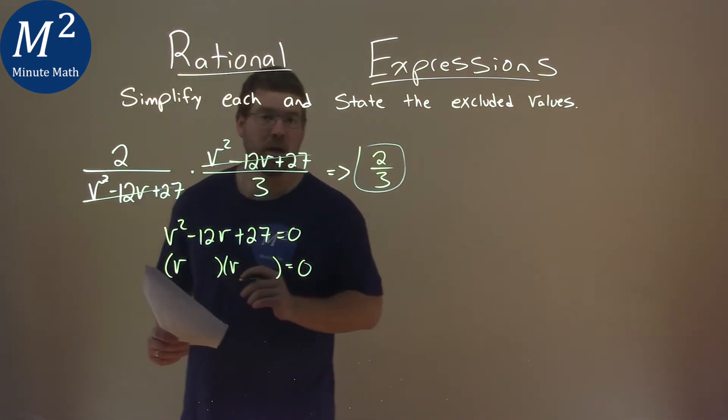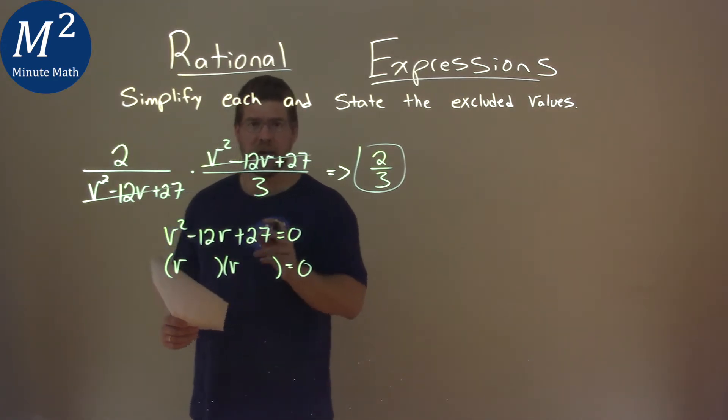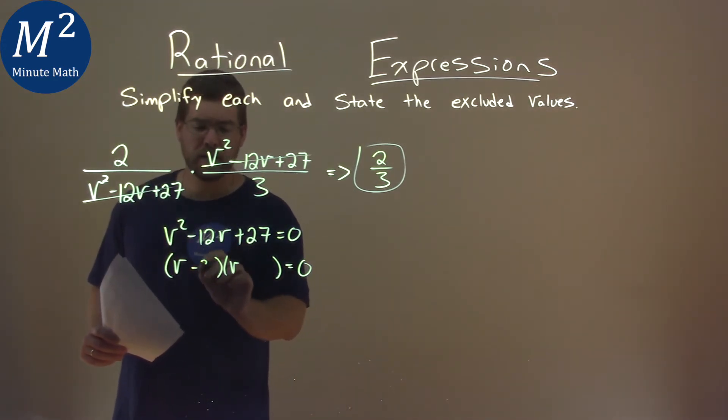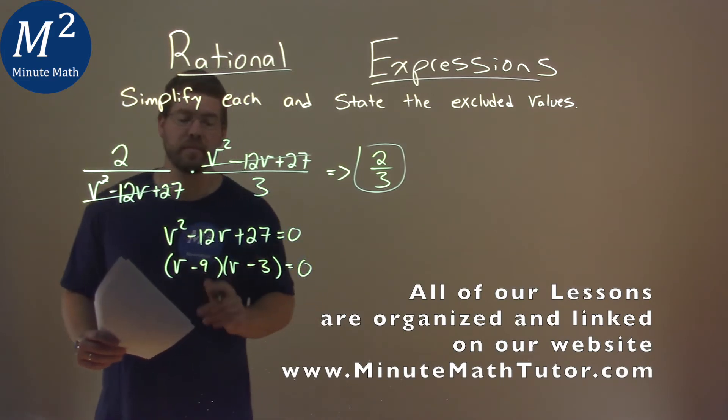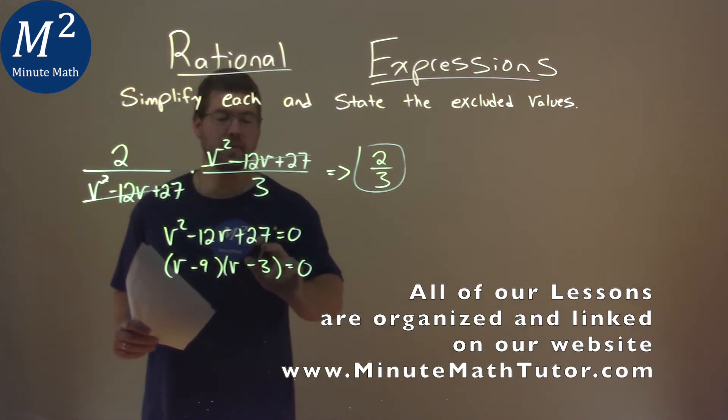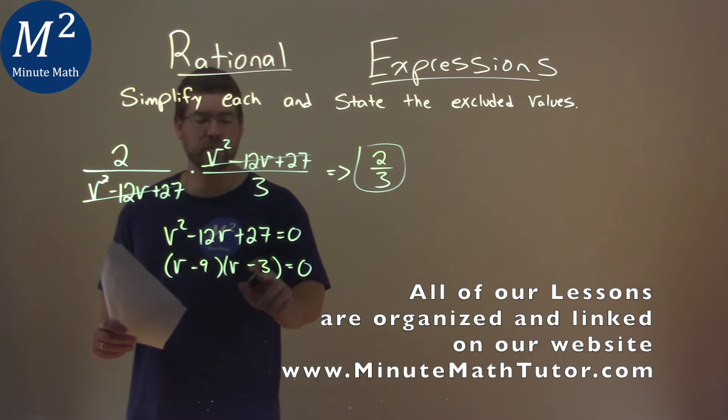What two numbers multiply to be a positive 27 but add to be a negative 12? That's a negative 9 and a negative 3. Negative 9 times negative 3 is positive 27. Add the 2, negative 12.